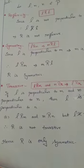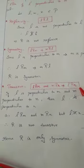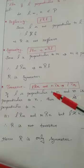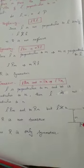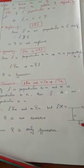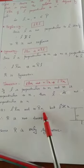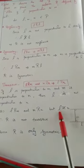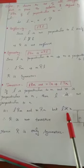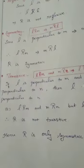Next, transitivity. The definition is: L related to M and M related to N implies L related to N. See the diagram — here L is perpendicular to M, and M is perpendicular to N. But L and N are not perpendicular to each other. Therefore L related to M and M related to N does not imply L related to N. Therefore R is not transitive. Hence the relation is only symmetric. Thank you.